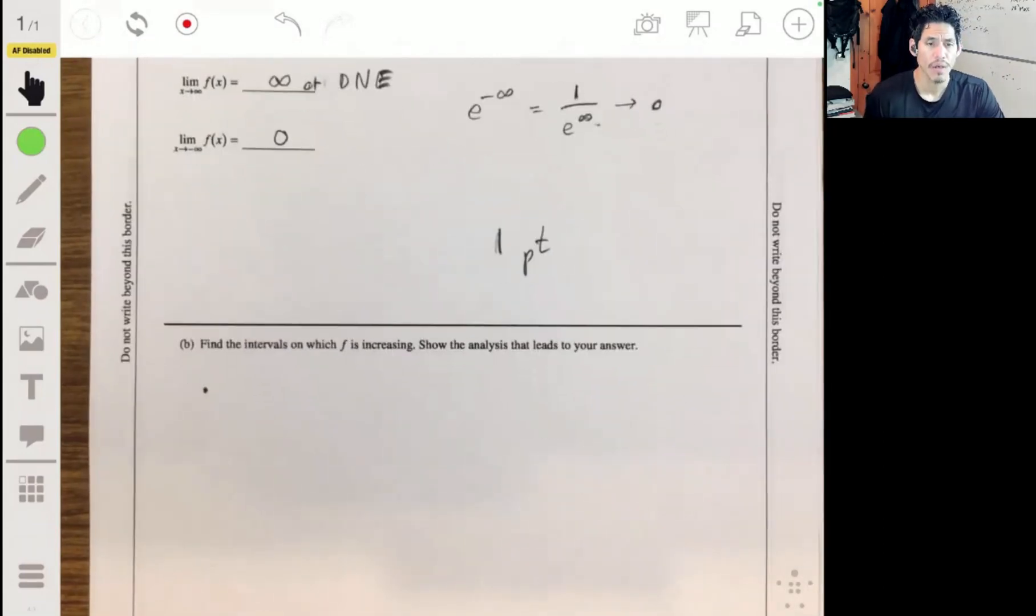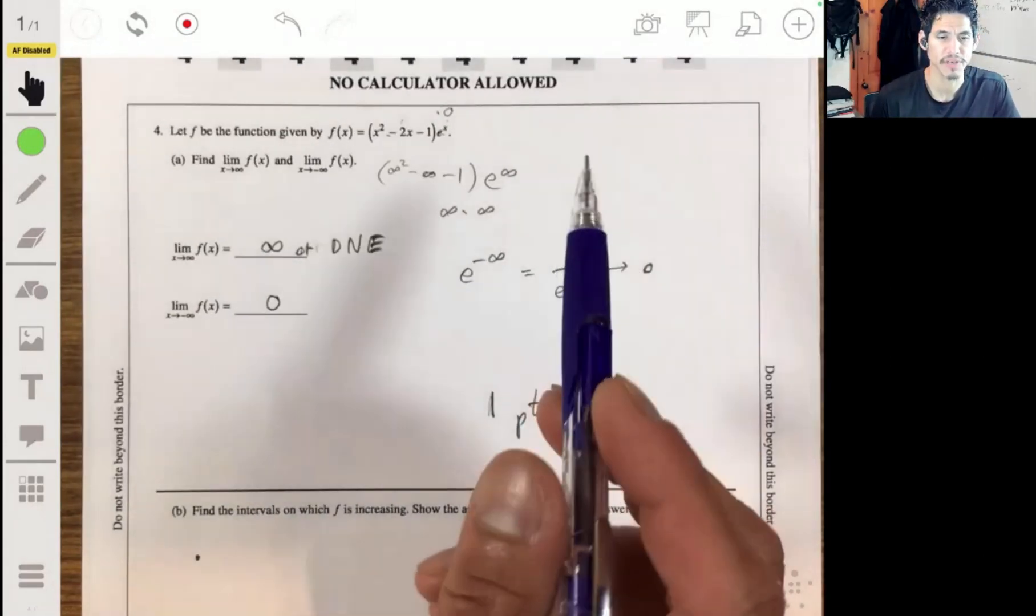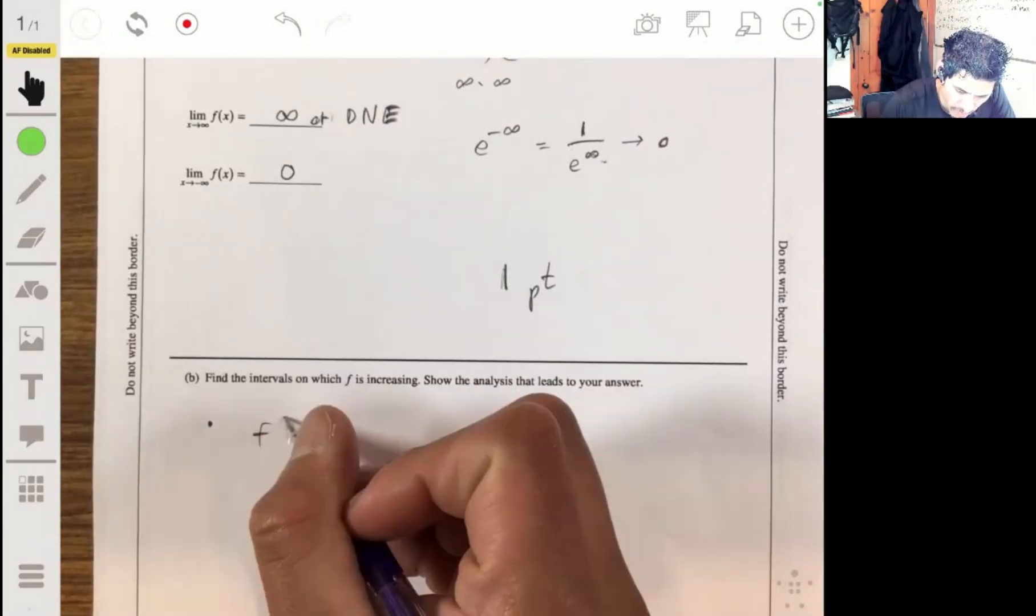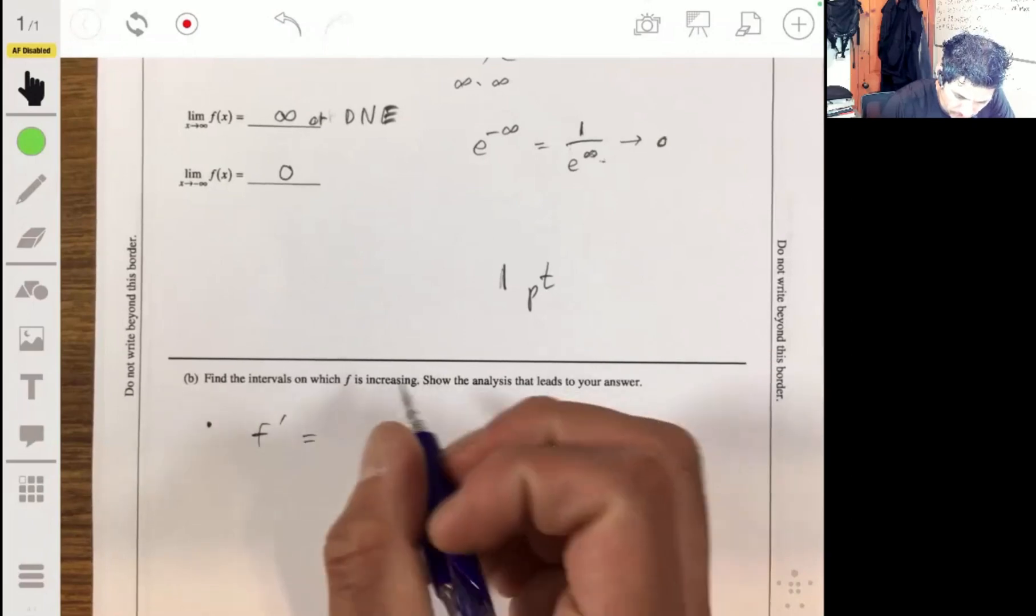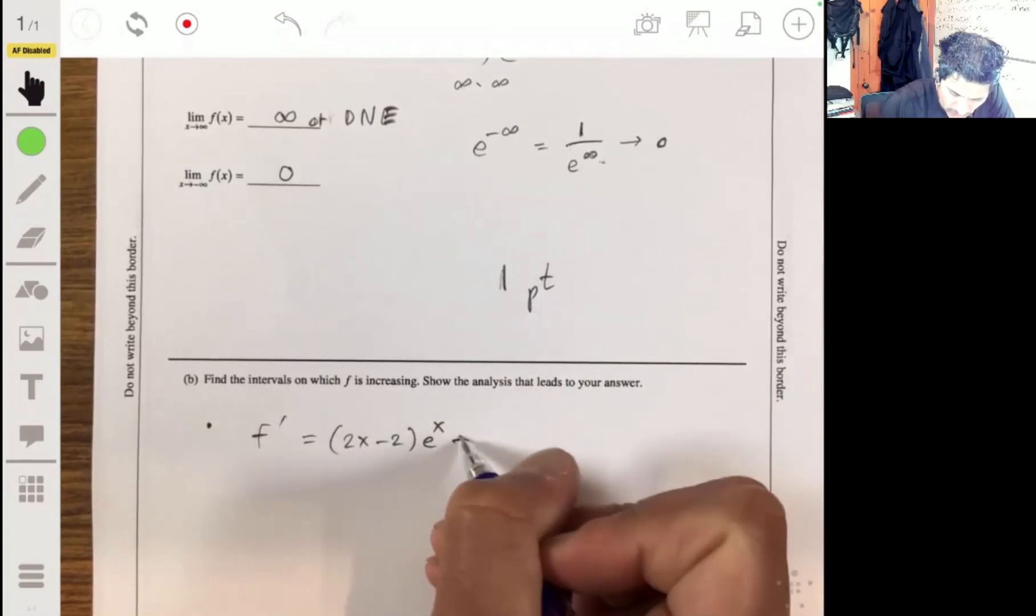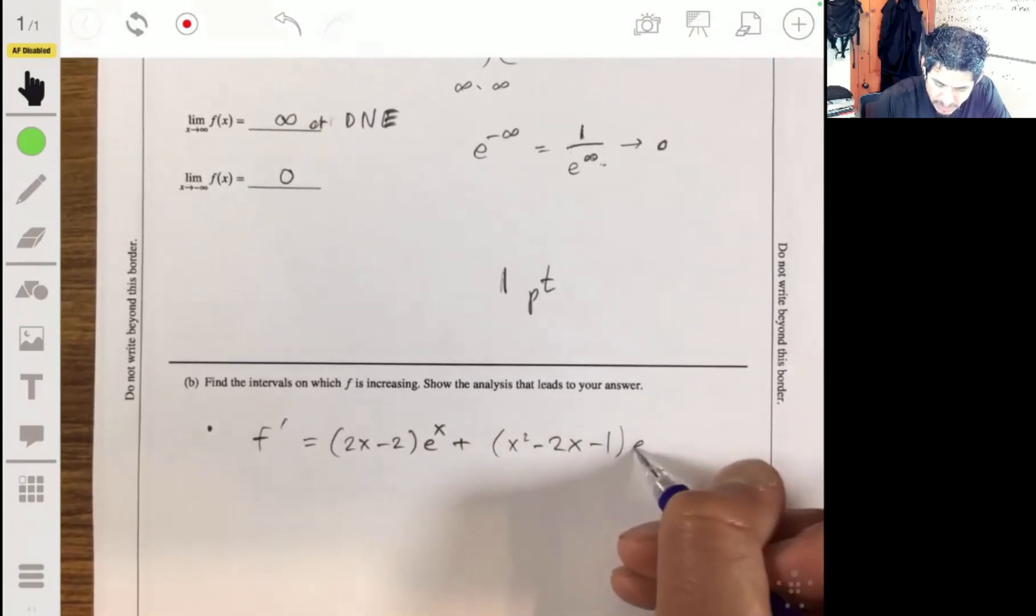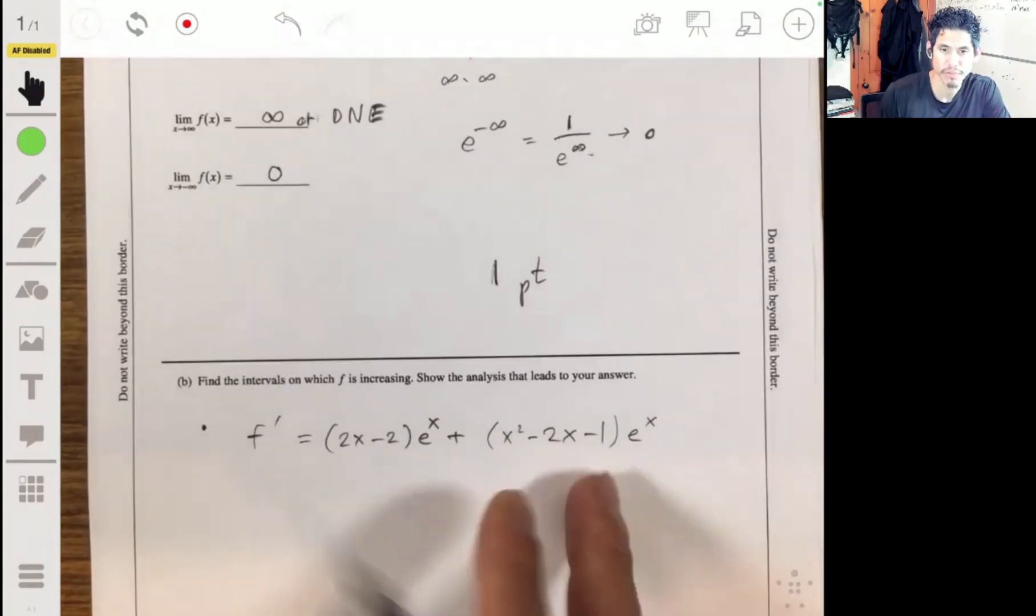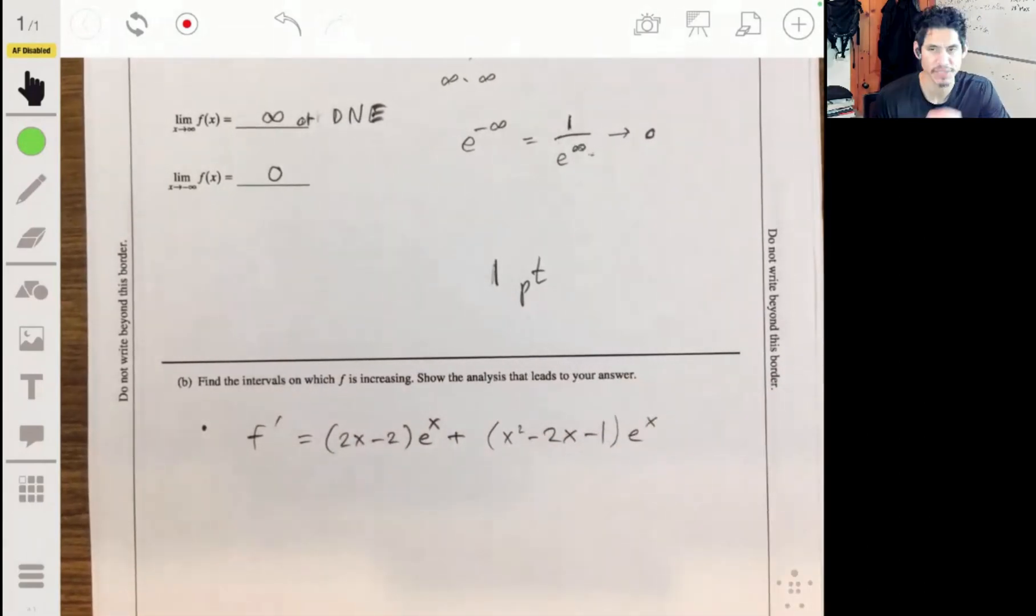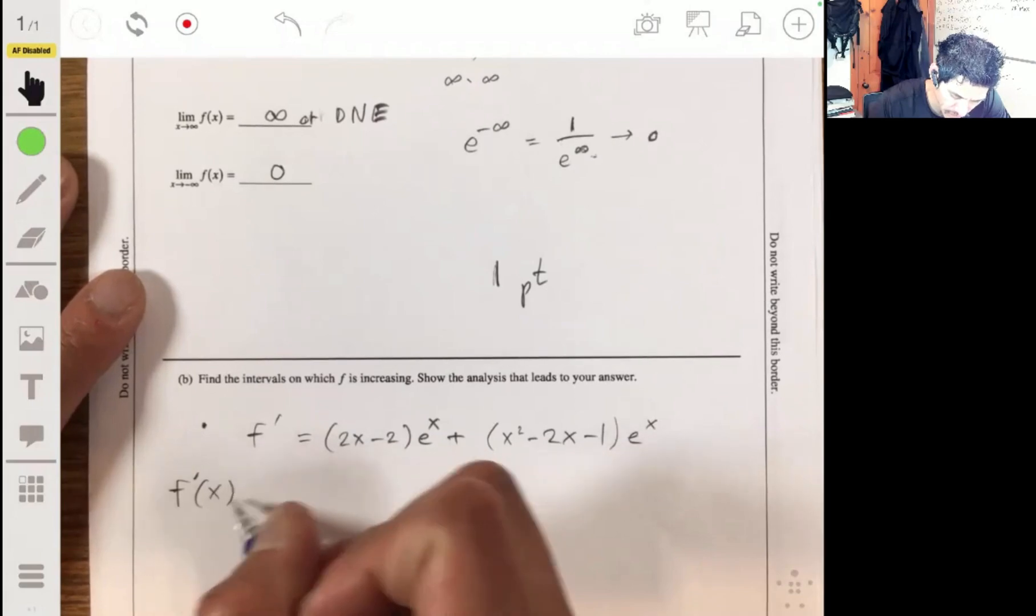Find intervals where f is increasing and show the analysis that leads to your answer. So we just have to look at the first derivative and see where it's positive. So let's look for critical points. So f prime will be 2x minus 2 times e to the x, plus x squared minus 2x minus 1 times e to the x, using the product rule. Remember, derivative of this times this, keep this the same, times the derivative of e to the x, which stays as e to the x.